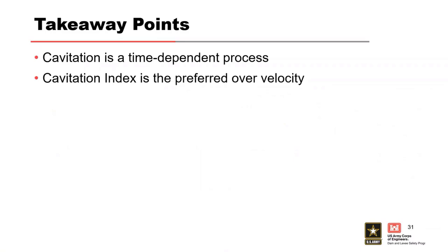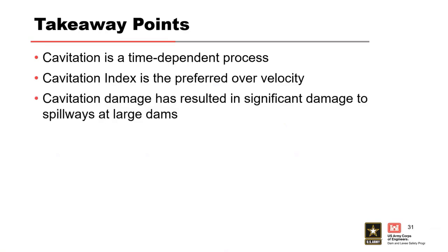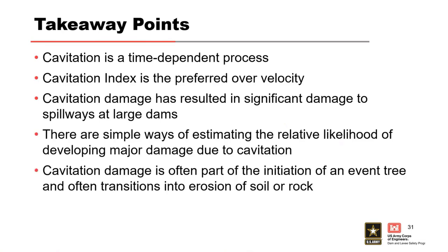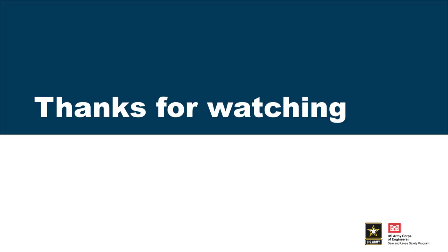This is very time-dependent. Some references relate to a threshold velocity — 40 or 60 feet per second — which gives a relative screening, but the cavitation index is pretty easy to compute and is a better indicator of cavitation damage potential. Glen Canyon and Hoover are really large dams that were subject to severe cavitation damage because they were thin chutes, which then resulted in pretty severe scour due to their erodible foundations. It's only the initiation, and then we're back into erosion of rock and soil.